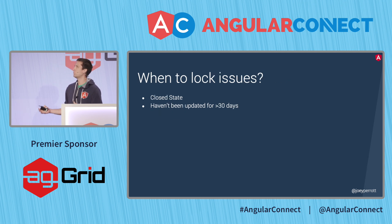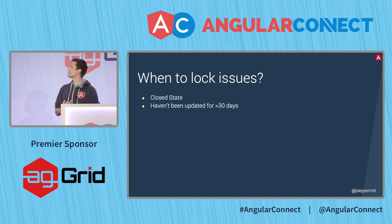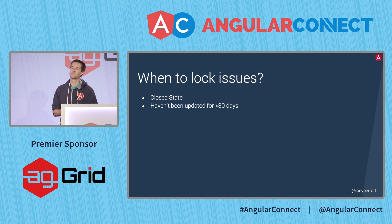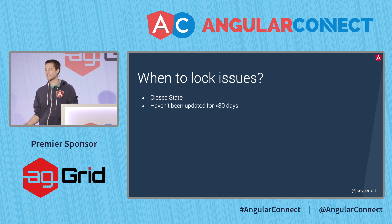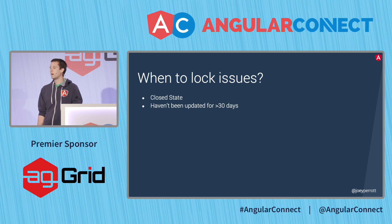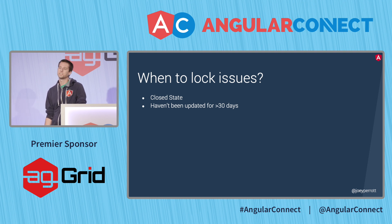First we have to decide when we would lock an issue. For us, it came down to two pieces of criteria. We only want to lock issues that are already closed — we're not looking to stop people from talking to us or to say that their issue isn't important. This is when we've already resolved something. And past that, we want to make sure the conversation has actually ended, so we decided on over 30 days where nothing has happened on the issue.